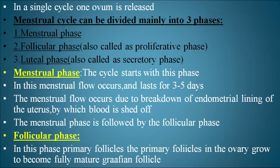The cycle starts with the menstrual phase, in which menstrual flow occurs and lasts for three to five days. The menstrual flow occurs due to the breakdown of the endometrial lining of the uterus, by which blood is shed.